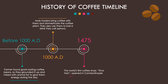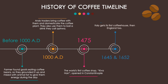1475: the world's first coffee shop, Kivahan, opened in Constantinople. 1645 and 1652: Italy got its first coffee house, then England too.